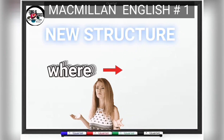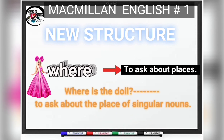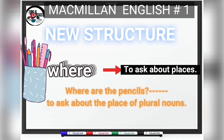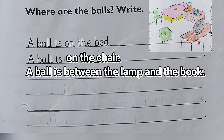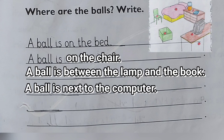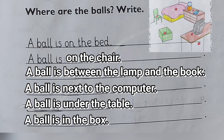Structure — WHERE. We use WHERE to ask about places. For singular nouns: where is the doll? For plural nouns: where are the pencils? Where are the balls? A ball is on the bed. A ball is on the chair. A ball is between the lamp and the book. A ball is next to the computer. A ball is under the table. A ball is in the box.